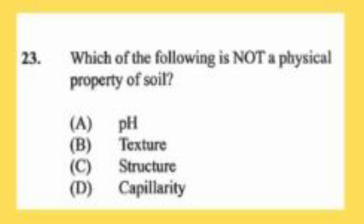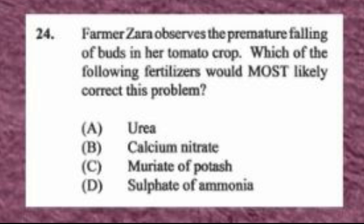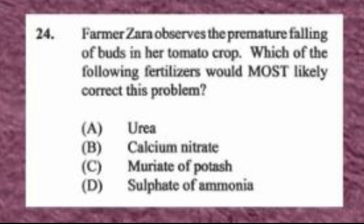Question number twenty-three: which of the following is not a physical property of soil? A) pH, B) texture, C) structure, D) capillarity. The answer is A, pH. Question number twenty-four: a farmer observes the premature falling of buds in a tomato crop. Which fertilizer would correct this? The answer is C, muriate of potash, because falling buds indicate a lack of potassium.